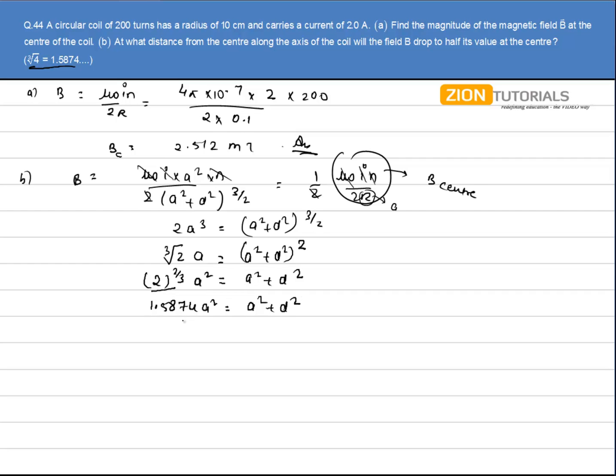A square goes over here. So, 0.5874 A square is equal to D square.